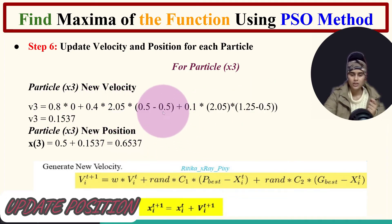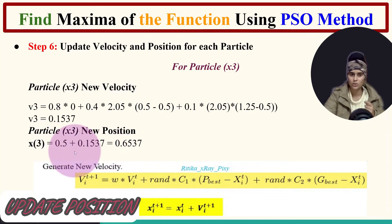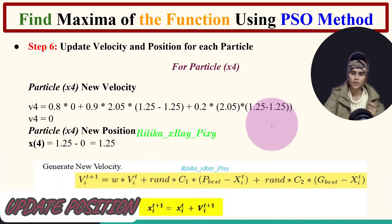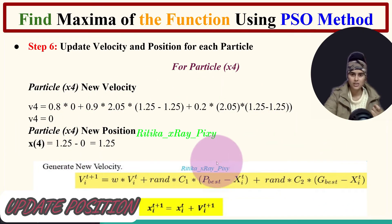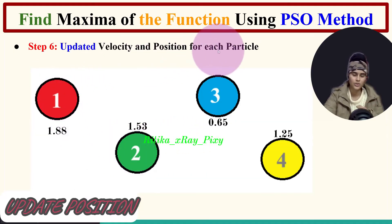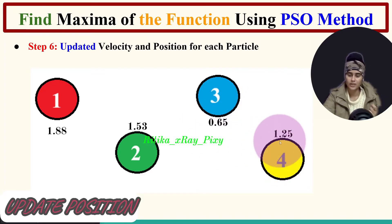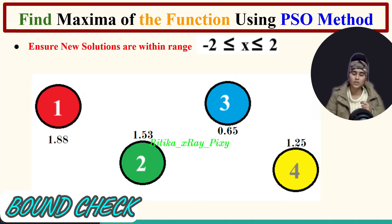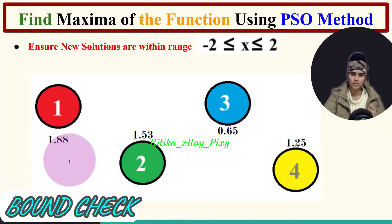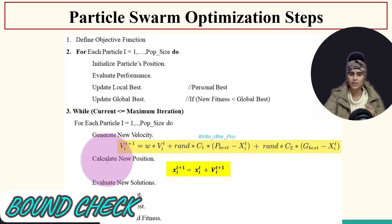For particle 3 (position = 0.5), we calculate velocity = 0.1537, so the new position is 0.5 + 0.1537 = 0.6537. For particle 4, since the global best and its position are the same (1.25), the velocity is 0 and the new position remains 1.25. Updated positions: particle 1 = 1.88, particle 2 = 1.537, particle 3 = 0.6537, particle 4 = 1.25 - all within range [-2, 2].